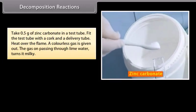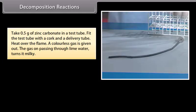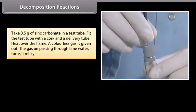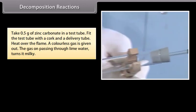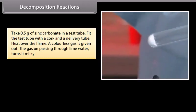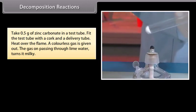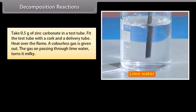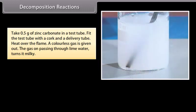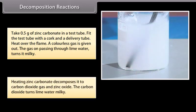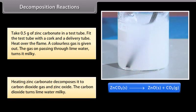Take 0.5 gram of zinc carbonate in a test tube. Fit the test tube with a cork and a delivery tube. Heat over the flame. You will see a colorless gas is given out. The gas on passing through lime water turns it milky. Heating zinc carbonate decomposes it to carbon dioxide gas and zinc oxide. The carbon dioxide turns lime water milky.